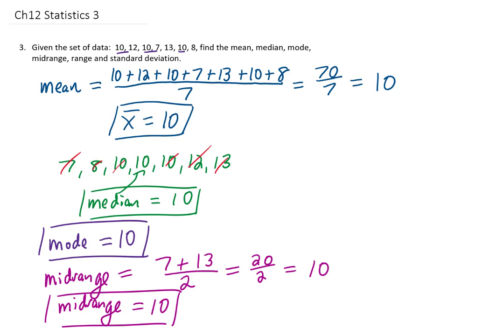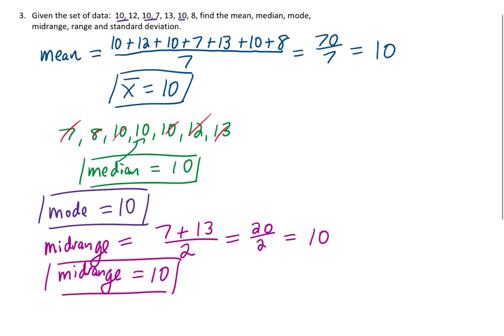I don't have a graph of this data, but our mean, our median, and our mode, and our midrange, all being the same value, is really suggesting to me that this is normally distributed data. We have more calculations to do.